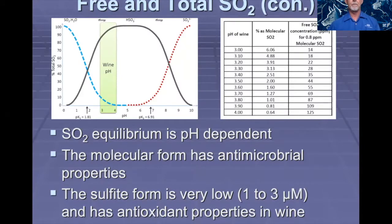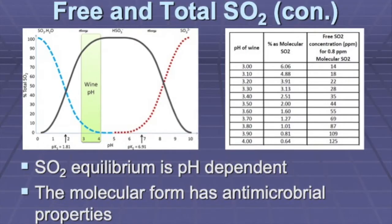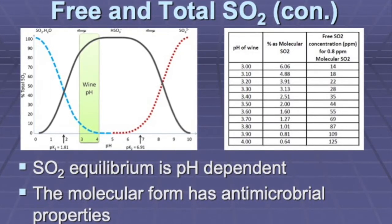Sulfur dioxide is a colorless gas and can dissolve into liquid. In this figure we can see the molecular form of sulfur dioxide in water, which is pH dependent, and it's in equilibrium with the bisulfite form HSO3 and the sulfite form SO3, which is also pH dependent. So in a wine with a pH between 3 and 4, we primarily have the bisulfite form. The molecular form has very low solubility in liquid, but this is actually the form that is antimicrobial and important for antioxidant activities.